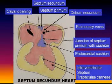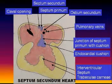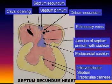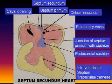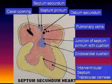With the formation of the atrioventricular valves between the atria and ventricles, the heart becomes four-chambered with only the foramen ovale as the opening between the atria. The ostium secundum is the foramen ovale.